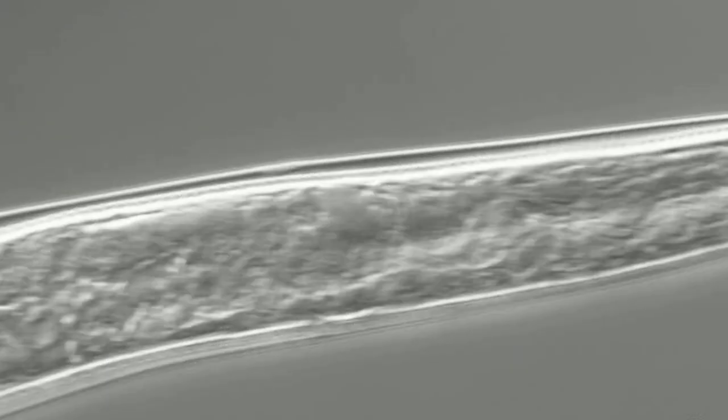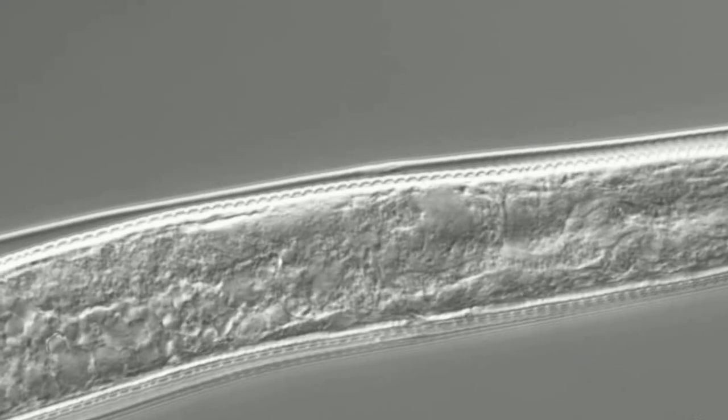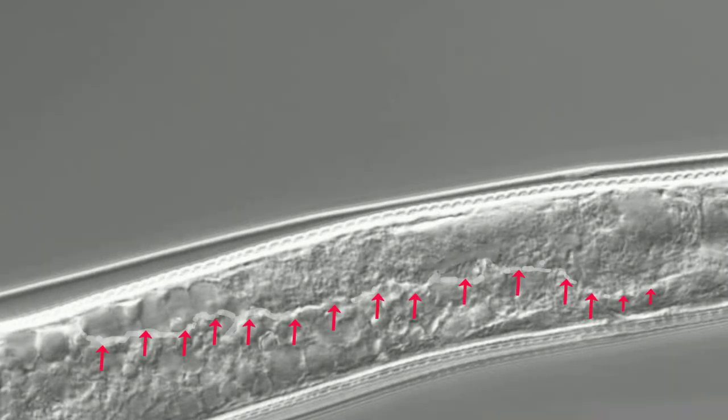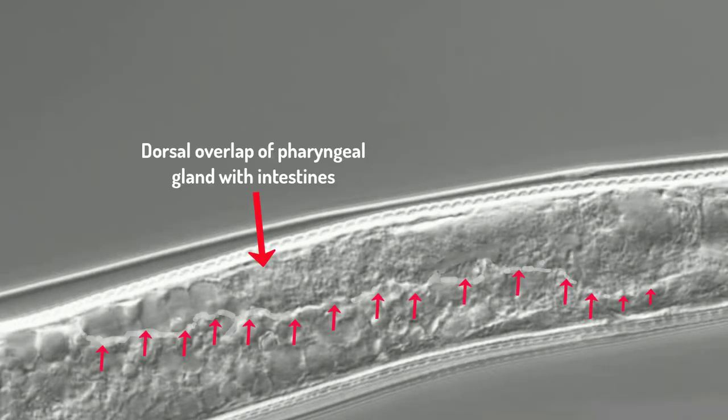Furthermore, when we move posteriorly towards the intestines, we clearly see that the pharyngeal glands overlap the intestines on the dorsal side of the nematode.